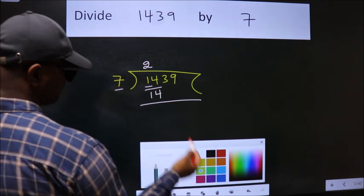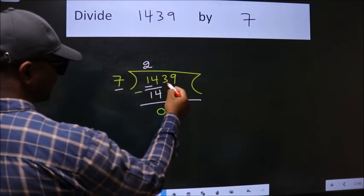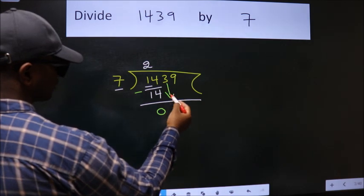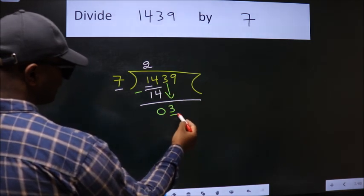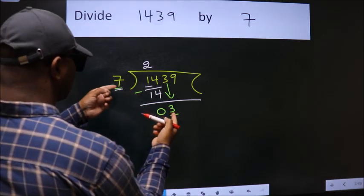Now we should subtract. We get 0. After this, bring down the beside number. So 3 down. Here we have 3, here 7. 3 is smaller than 7.